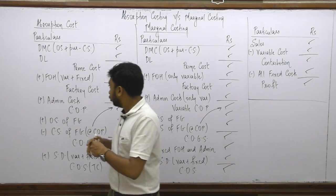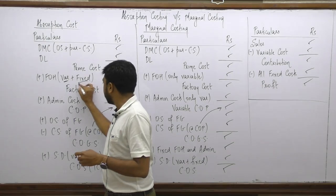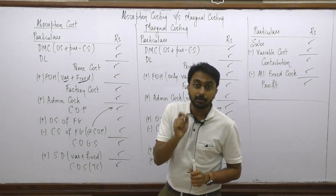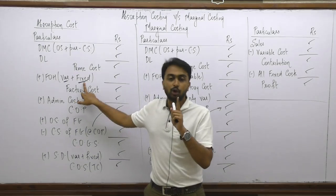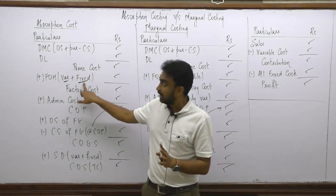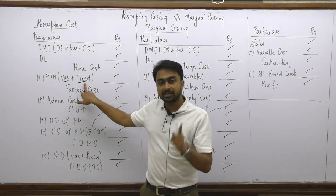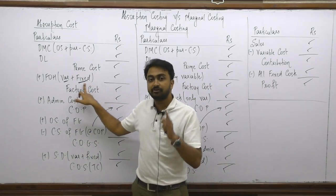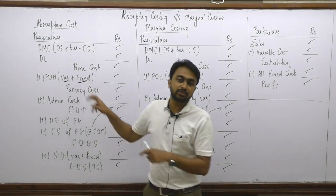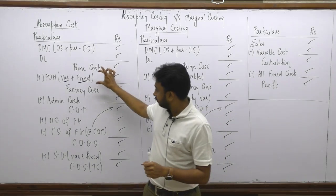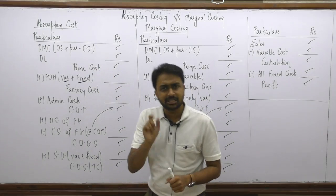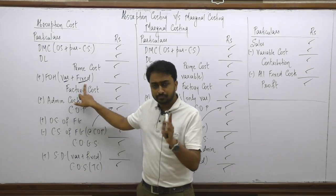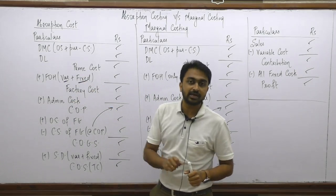Then we have factory overheads. An important point in absorption costing is that factory overhead includes both variable and fixed content. Fixed overheads are not incurred per unit, so they are always absorbed into the cost sheet. These are not budgeted or actual overheads — they are absorbed overheads. After we have actuals, we compare absorbed with actuals and treat any difference as under or over absorbed overheads. For now, understand that FOH in this context are always absorbed overheads.